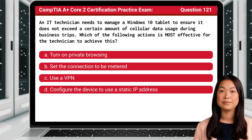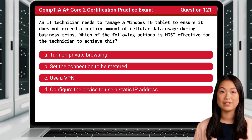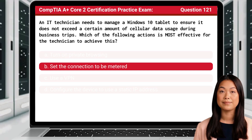Question 121. An IT technician needs to manage a Windows 10 tablet to ensure it does not exceed a certain amount of cellular data usage during business trips. Which of the following actions is most effective for the technician to achieve this? The answer is B: Set the connection to be metered.